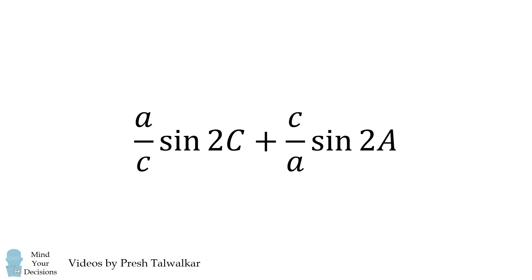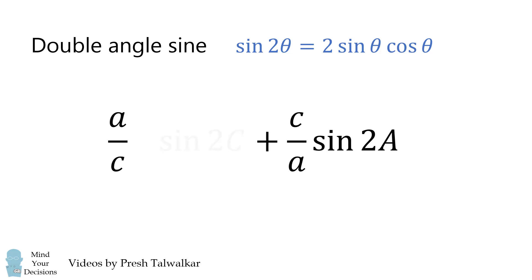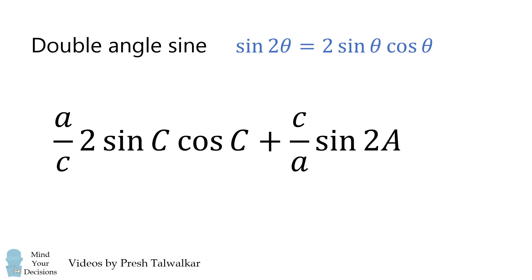We'll get started by simplifying this expression. We'll first use the double angle formula for sine. The sine of 2 times an angle is equal to 2 times the sine of that angle multiplied by the cosine of that angle. So we'll substitute in for sine of 2C, and then we'll substitute in for sine of 2A.